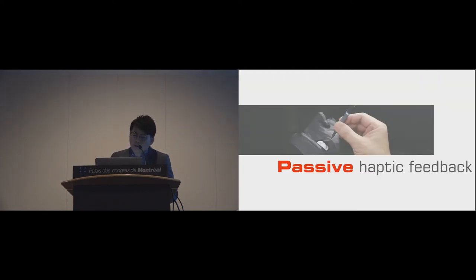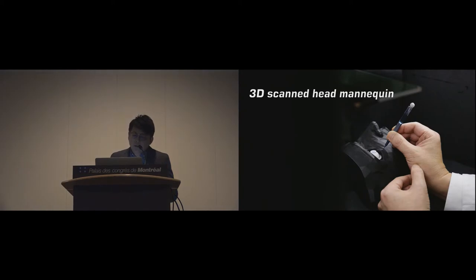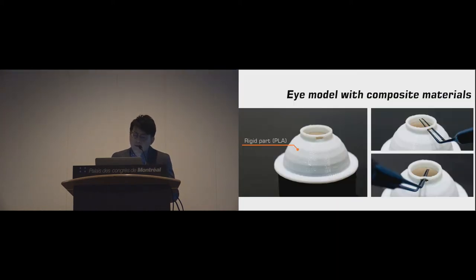We use two realistic models to provide passive haptic feedback. For a novice surgeon, finding a stable hand posture on a patient's face is the first challenge. A 3D-scanned head mannequin with realistic bone structure can help them to practice. The eyeball is soft during cataract surgery. We 3D-printed the upper part of the eye model with soft material to simulate this property. Therefore, the instrument can be rotated in a vertical direction, and the forceps opening angle will be limited while tilting.